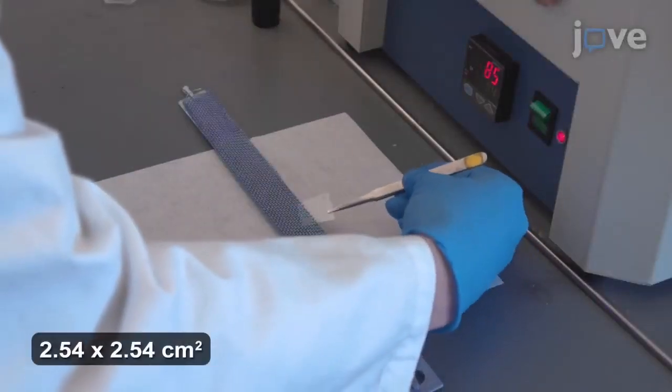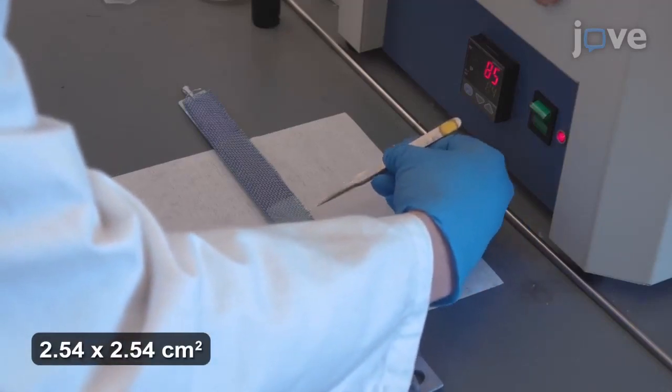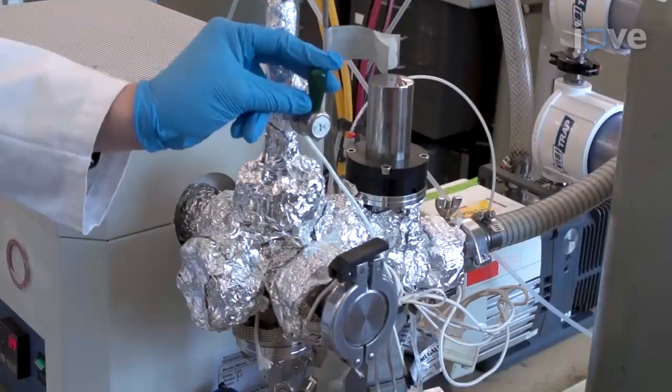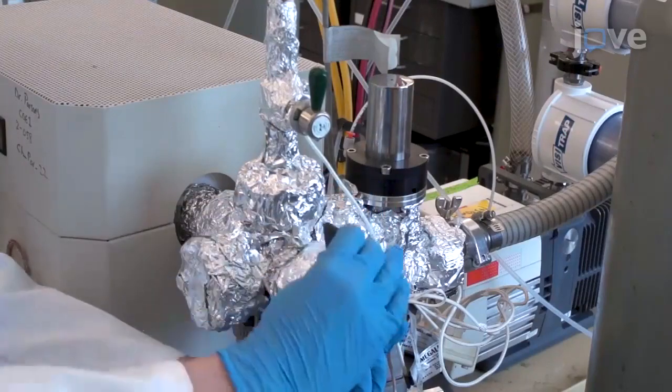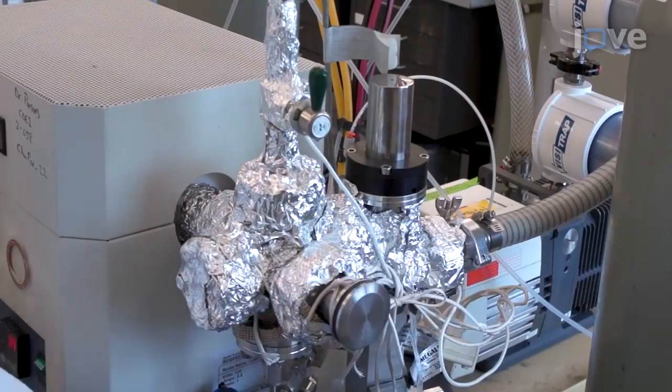First, place a PA-6 fabric sample in a reactor boat. Open the pressure gauge of the ALD reactor and remove the clasp from the reactor cap.